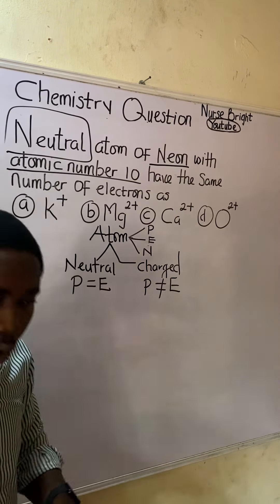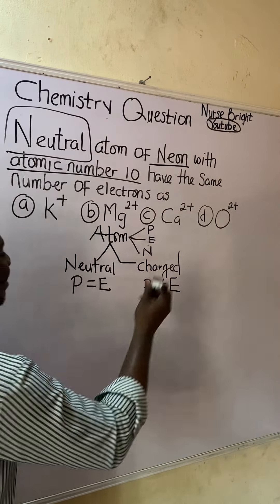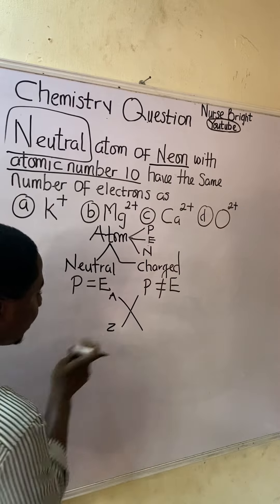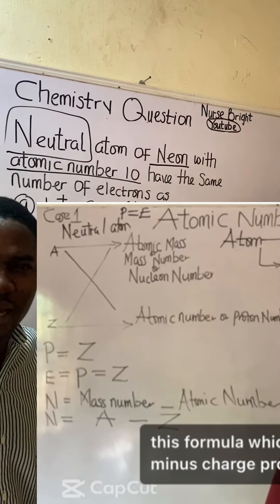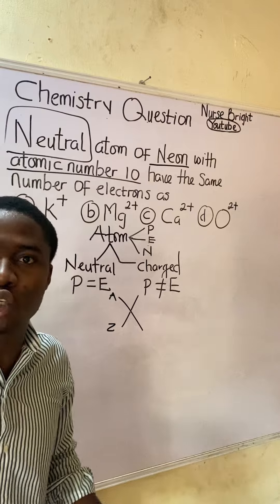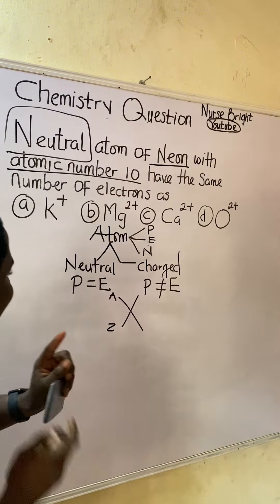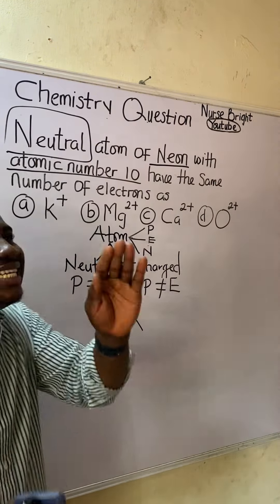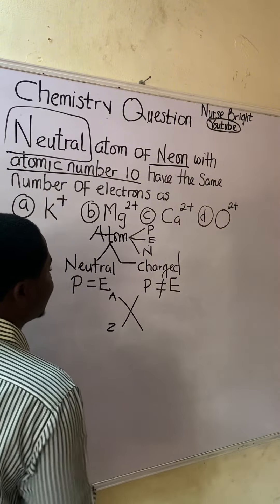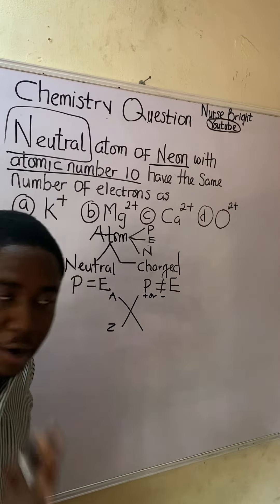Now, this is how an atom looks mathematically: we have X with A on top and Z at the bottom. A has a name and Z has its own name. Looking at this notation — is it neutral or charged? It is neutral, because it does not have a charge. If I had written plus or minus, it would be a charged atom.